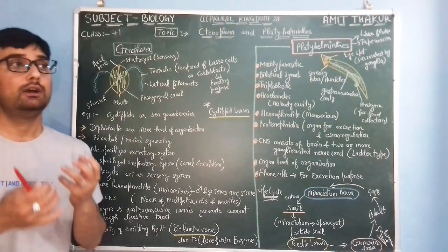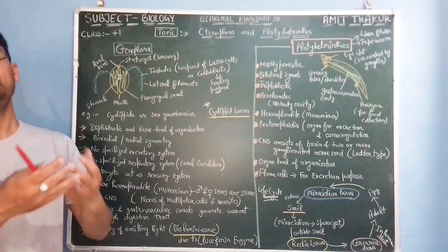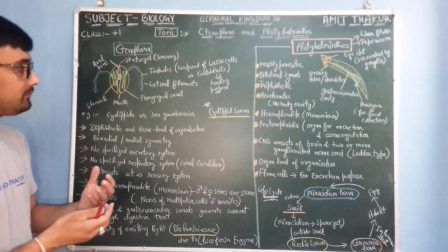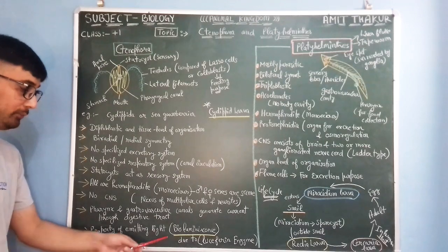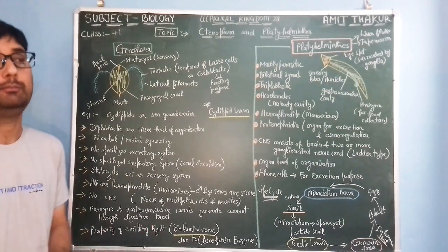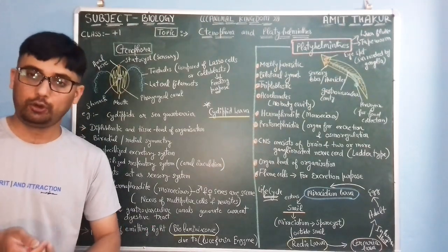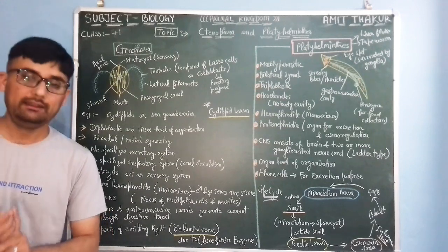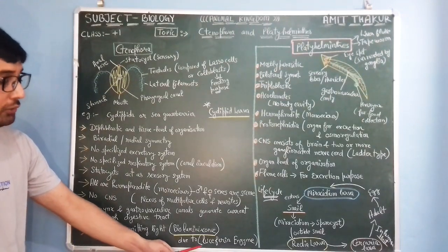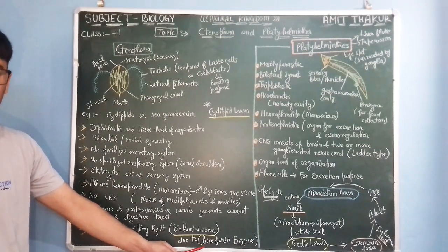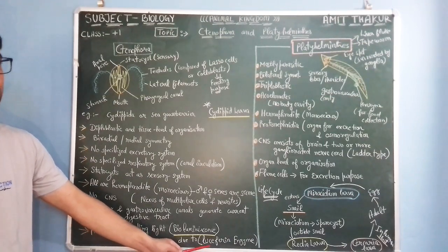Very important point, Ctenophora has the property of emitting light. They emit light and they do appear very scenic in the ocean. This property of emitting light is known as bioluminescence. This property of bioluminescence is due to having a specialized protein named luciferin, L-U-C-E-F-E-R-I, luciferin protein.